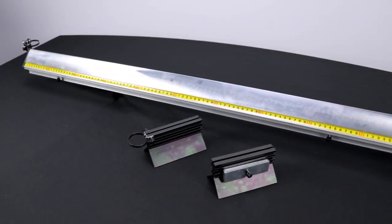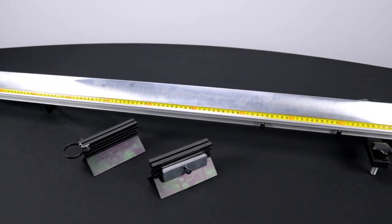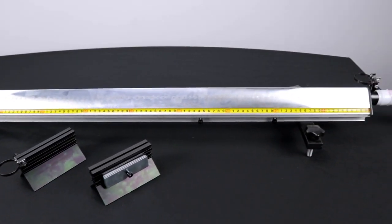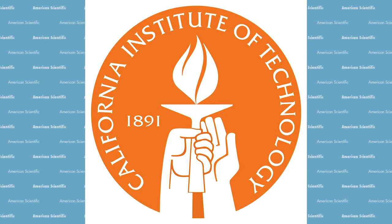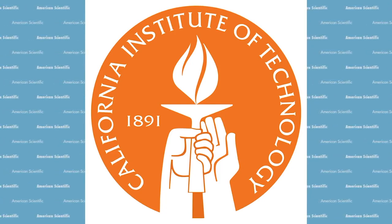An air track is a device used to study motion in a low friction environment. The device has small holes along the track. When air is pumped through it, carts can glide across nearly friction-free. The original track was invented at Caltech in the mid-1960s and measured approximately one meter long.